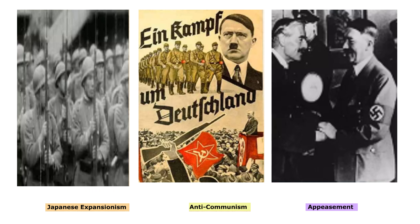Japan's invasion of Manchuria in 1931 and its subsequent expansion in China, leading to the Second Sino-Japanese War, demonstrated its imperialistic ambitions and set the stage for further aggression in the Pacific. Japan's quest for resources and territory in the Pacific region, particularly in Southeast Asia and the Pacific Islands, contributed to conflicts and hostilities, ultimately leading to its attack on Pearl Harbor, drawing the United States directly into the war.